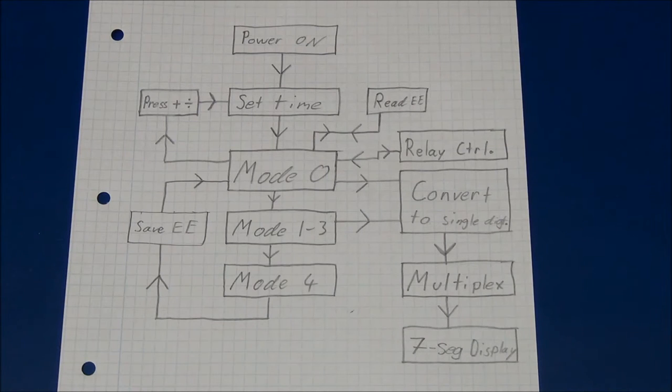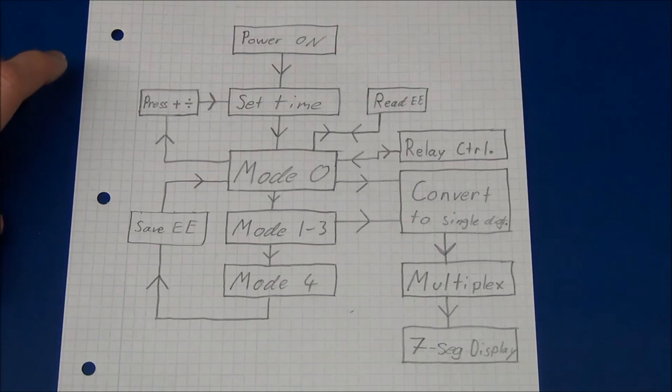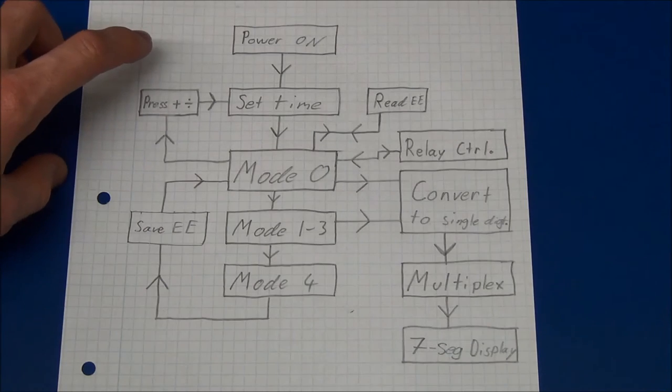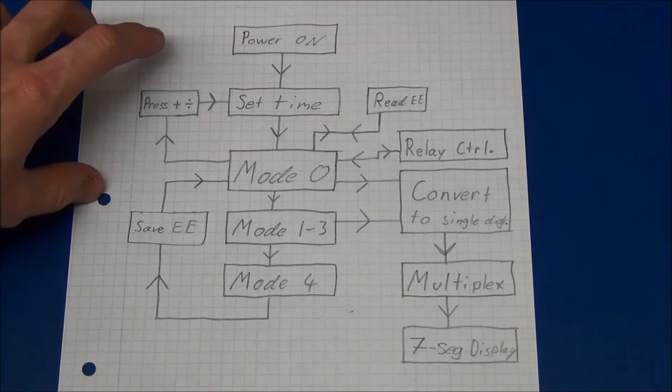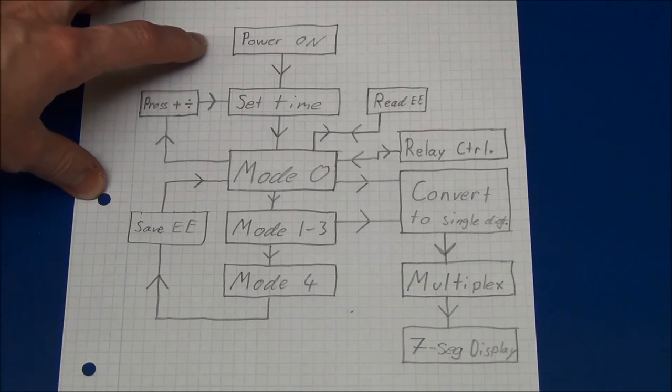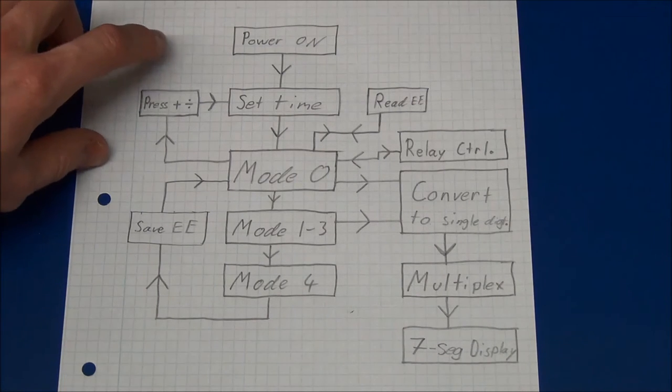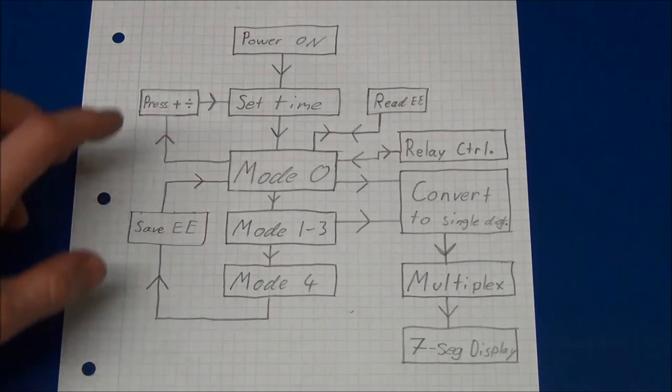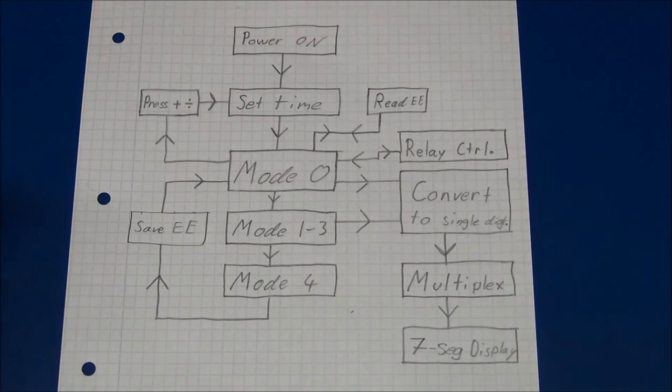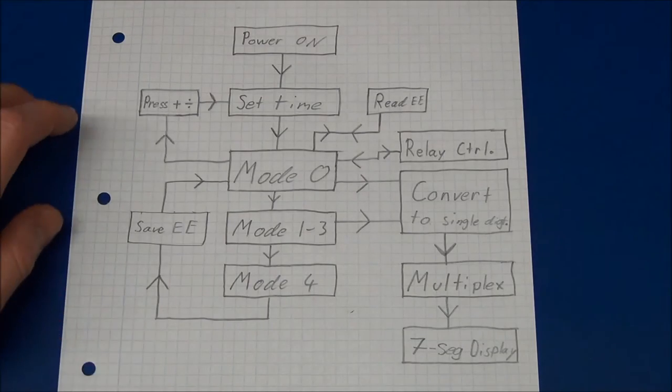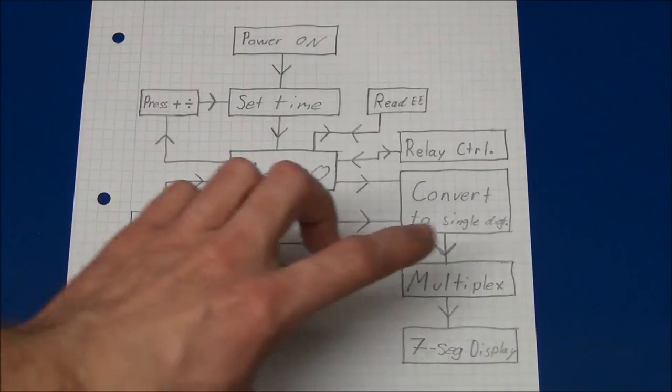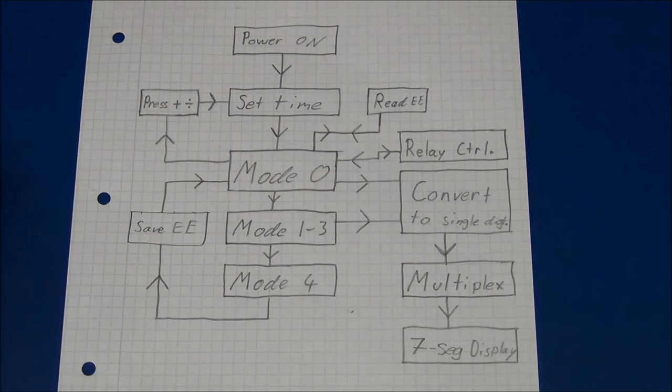So I have chosen a different method to describe the software than I used to do, because the code is a little longer and I guess it would not make much sense if I just went through all of it. So I did this block diagram basically of the code, so we can go through the different blocks and we can take a look at the actual code and see where these blocks are placed in the code.